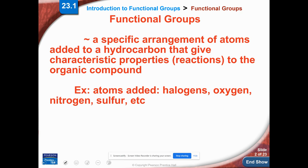A functional group is a specific arrangement of atoms added to a hydrocarbon. So we still have that basic hydrocarbon, and it's going to give us characteristic properties and characteristic reactions to that organic compound. So some kinds of atoms we can add: we can add those halogens. And so, again, remember halogens are group number 17 on your periodic table. And then we have oxygen, nitrogen, sulfur, and et cetera.